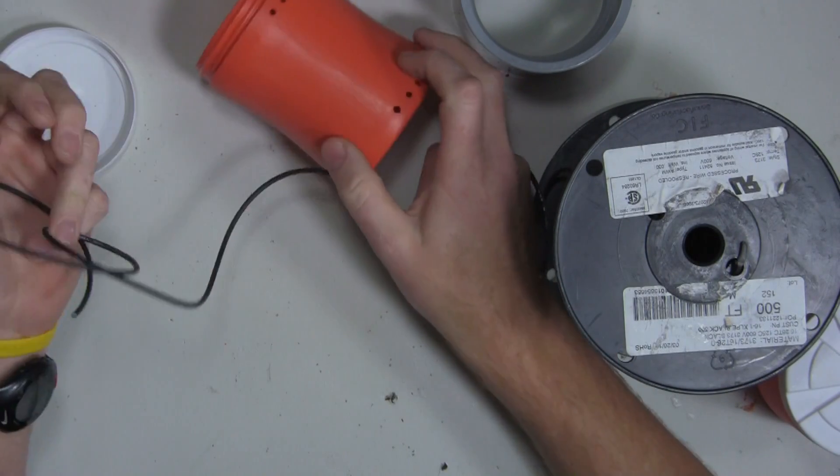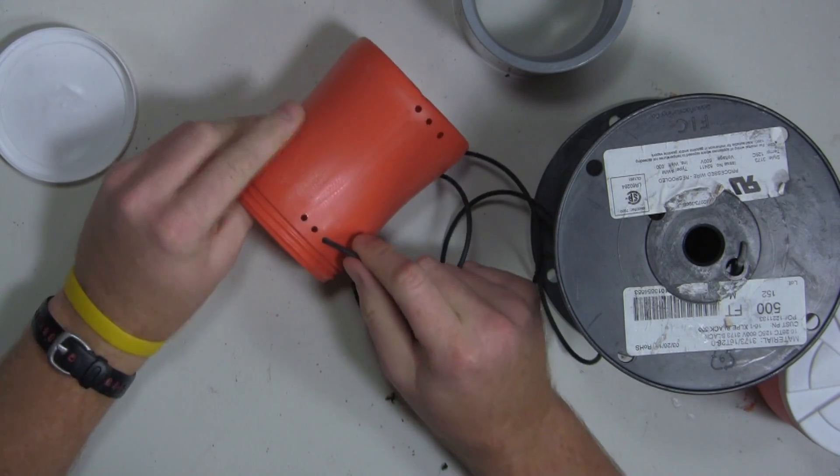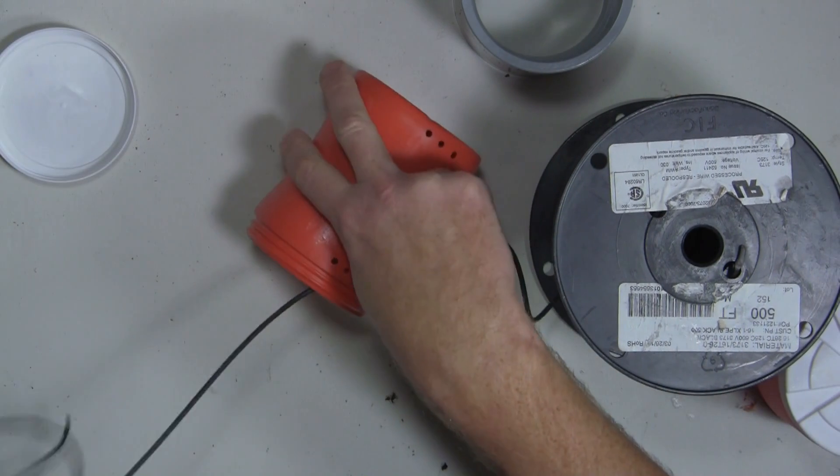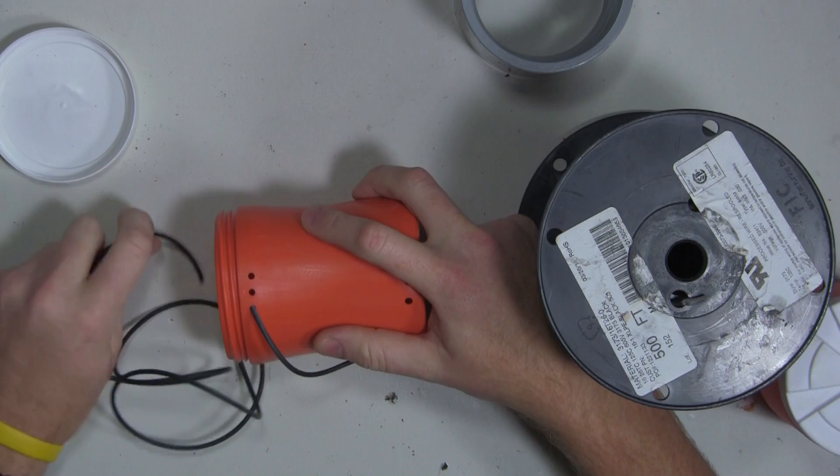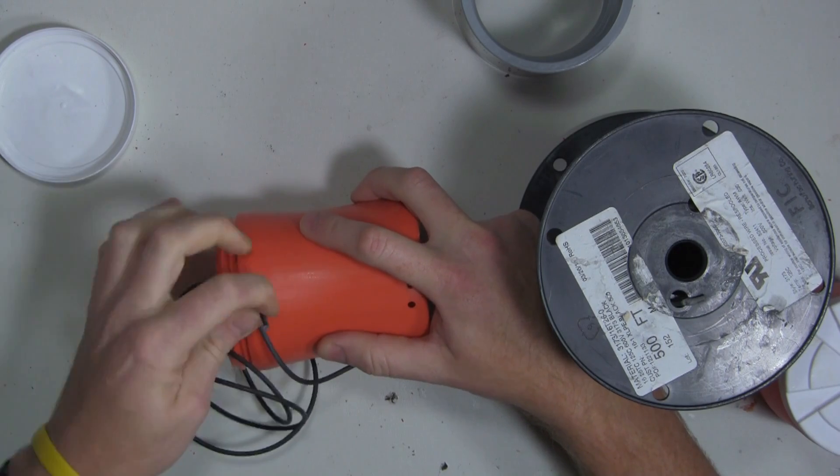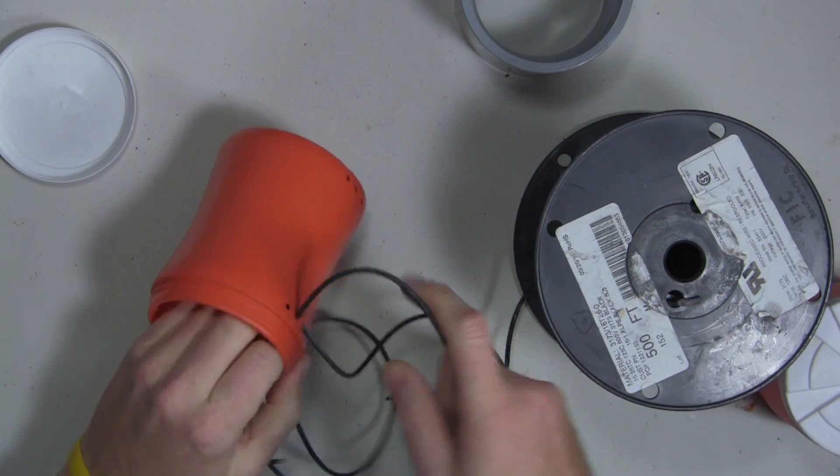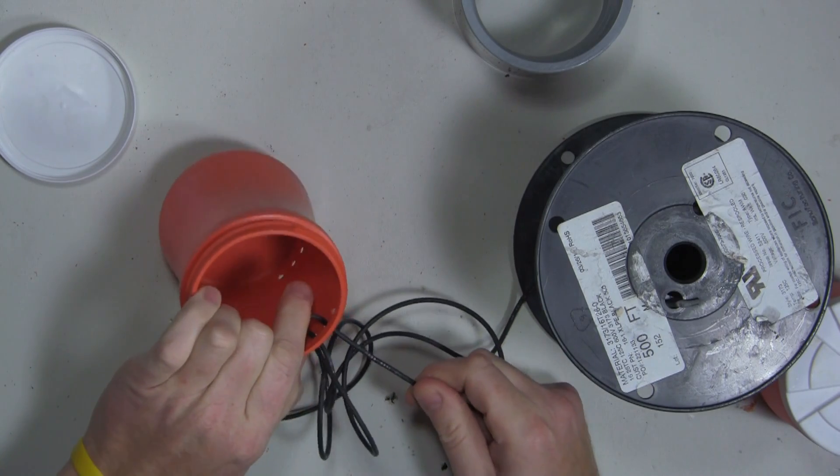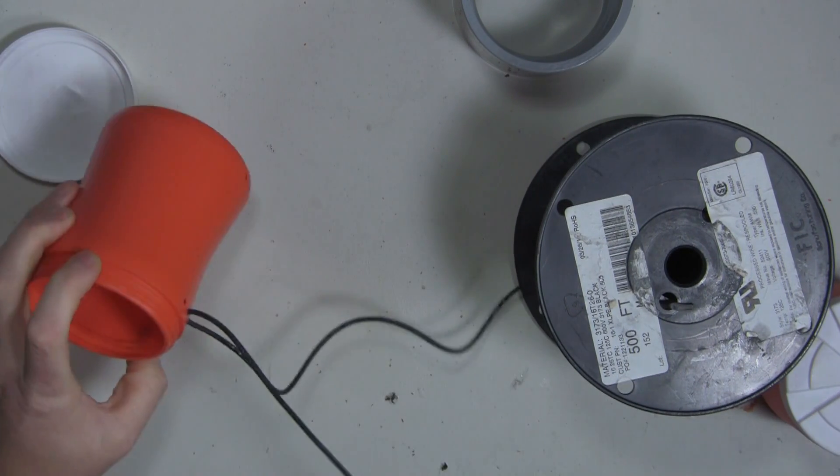So go ahead and pull out a couple feet of wire and you want to feed it through the top hole like that and then come from the inside like this. Try not to kink the wire.